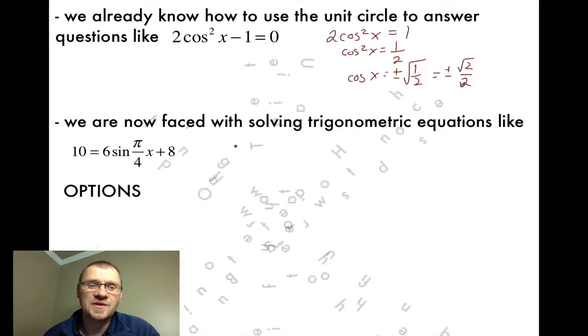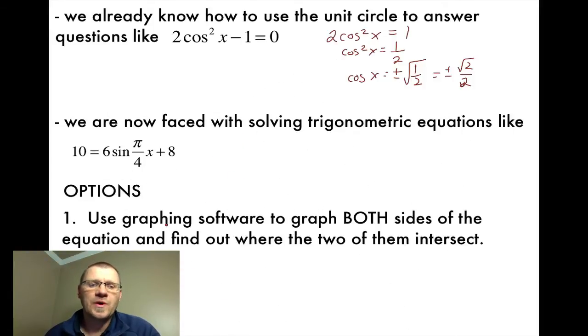What we're going to do today, we need to solve trigonometric equations that look like this, where your value that you get after you isolate for sine isn't going to be a number on your unit circle. So there's three options in how to do this. Number one, we could use graphing software to graph both sides of the equation to find out where the two of them intersect.